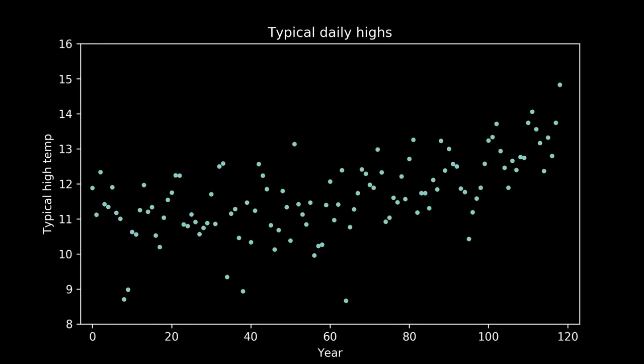Let's fit a model to some data. These are the annual temperatures for the last 120 years in a fictional Midwestern town. There's one point per year, the annual median of the daily high temperatures, and when we look at it our eye is really good at pulling out a pattern. There's a clear lift toward the right-hand side. We'd like to capture that in a model.